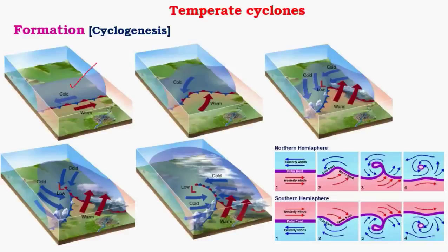We have a stationary front just like in the occluded front, with cold and warm air masses pushing against each other. In the next stage we see complete occlusion, and once occlusion occurs, the cyclone simply dissipates. The cyclone is very intense during the occlusion stages with intense rainfall. Once this stage is passed, the rainfall gets less intense and finally ceases — this is called the dissipation of the cyclone.